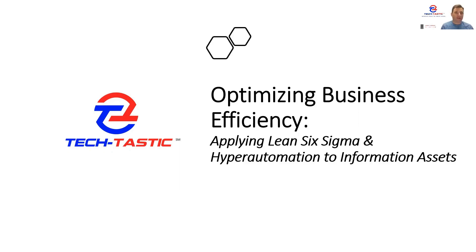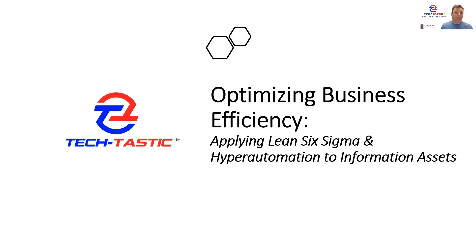Additionally, we're going to be talking about cost and value of information assets. And finally, we have a case study that we're going to be using throughout this video series, where we apply Lean Six Sigma and hyper automation. We're going to show you the cost and value today — what happened before and after we applied Lean Six Sigma and hyper automation.